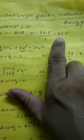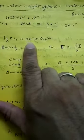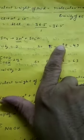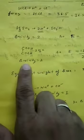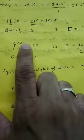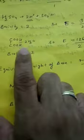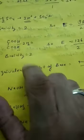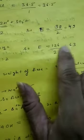For H₂SO₄, two H⁺ ions are released, so the equivalent weight is 98 divided by 2, which equals 49 — where 98 is the molecular mass of H₂SO₄. For oxalic acid, the basicity is also 2, as two H⁺ ions are released. The equivalent weight is 126 divided by 2, equal to 63, where 126 is the molecular mass of oxalic acid.